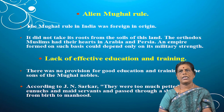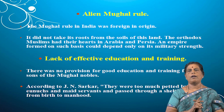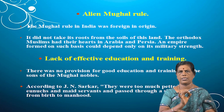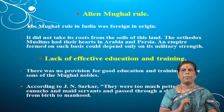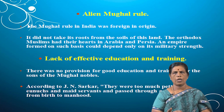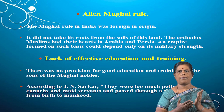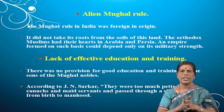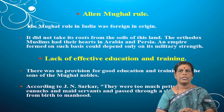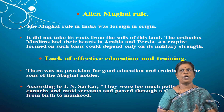Alien Mughal rule was another cause. The Mughal rule in India was foreign in origin — Babur came from Kabul, the capital of Afghanistan, and founded the Mughal dynasty. This rule did not take its root from the soil of India. The Orthodox Muslims had their hearts in Arabia and Persia. An empire formed on such a basis could depend only on its military strength, and that military had also become weakened during the later Mughals.